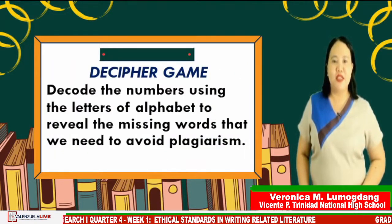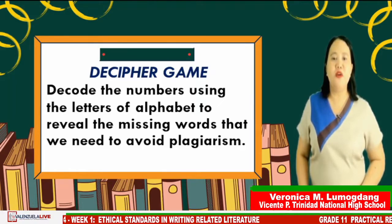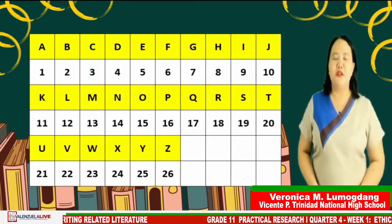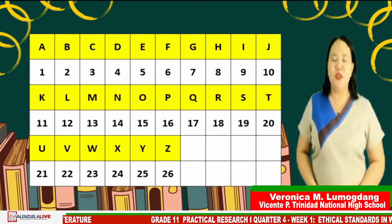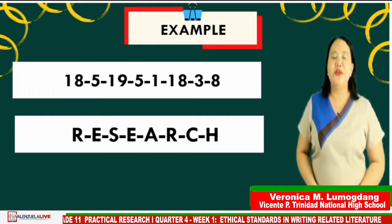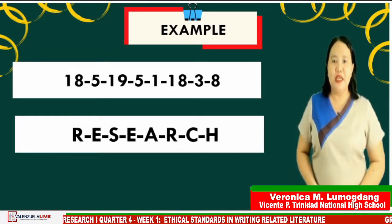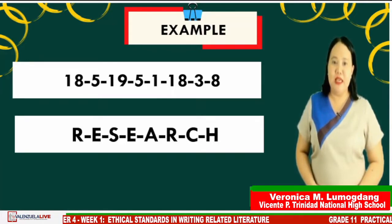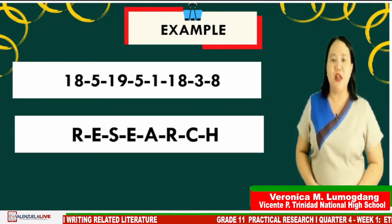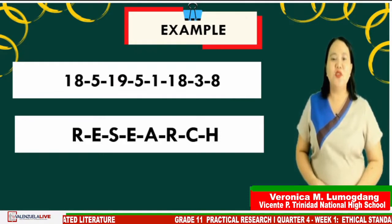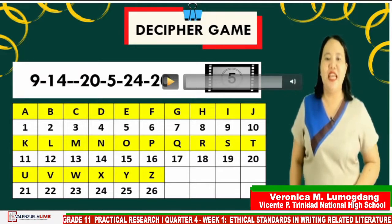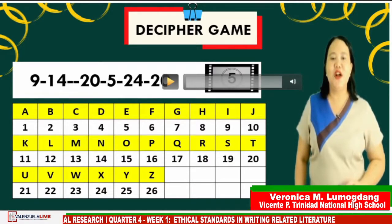Here are the mechanics of the game. Decode the numbers using the letters of the alphabet to reveal the words that we need to avoid plagiarism. This will be your guide to decipher the numbers. We have the letters of the alphabet and the numbers 1 to 26. For example, number 18 stands for letter R, 5 for E, 19 for S, 5 is E, 1 is letter A, 18 for R, 3 is for letter C, and 8 for letter H — these numbers reveal the word RESEARCH. You have 5 seconds to decipher each number. Just type the word in the comment section. Let's start!